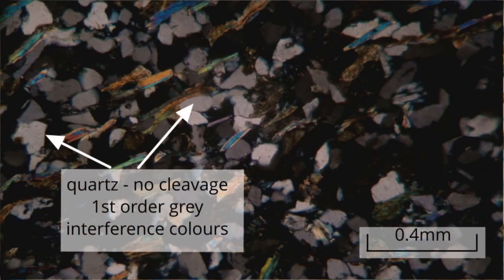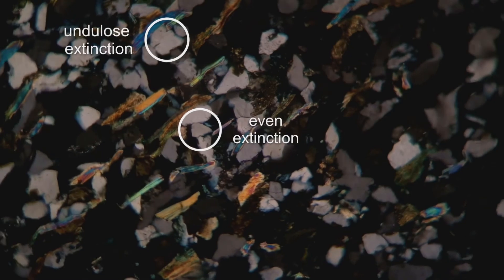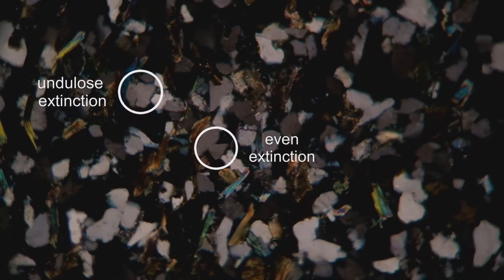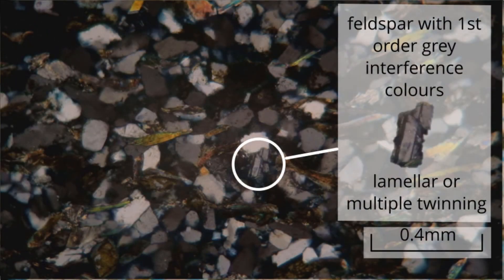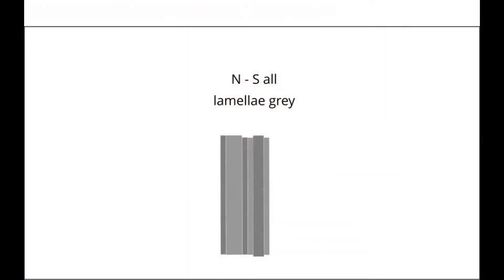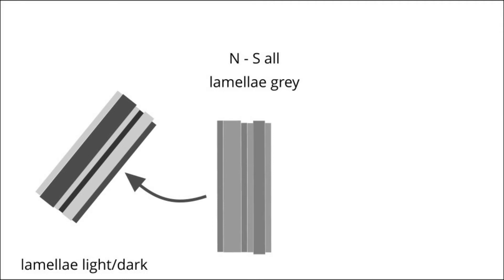Under crossed polars, the quartz is identified by its first-order grey interference colours and lack of twinning. Some of the grains show an even extinction; others show an undulose extinction pattern. Feldspar is recognised by its first-order grey interference colours and twinning. This feldspar grain did not appear as a yellow stained grain under plain polarised light. Under crossed polars, it shows multiple or lamellar twinning and the grain is plagioclase feldspar. Rotation of the stage in one direction results in the sets of lamellae going dark and reaching extinction.